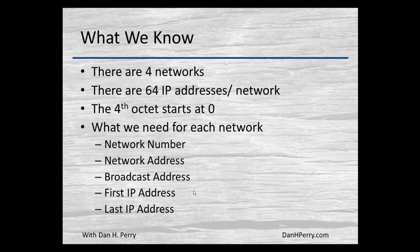If we borrow two bits, there are four networks, giving us 64 IP addresses in each network. The fourth octet — remember from the previous example — will start with zero. In our table we're just going to look at what's in the fourth octet for simplicity. We need to know for each network: the network number, network address, broadcast address, and first and last IP address.